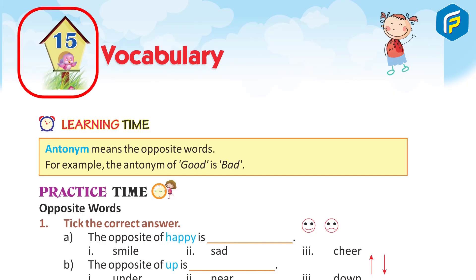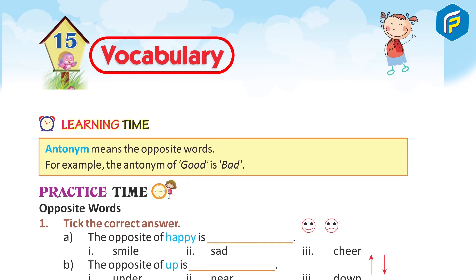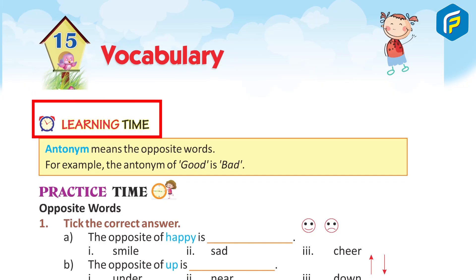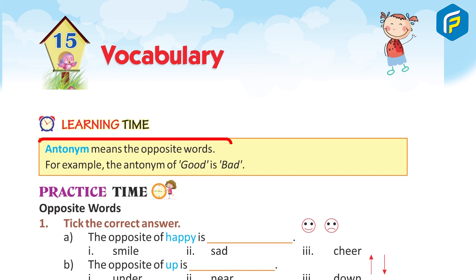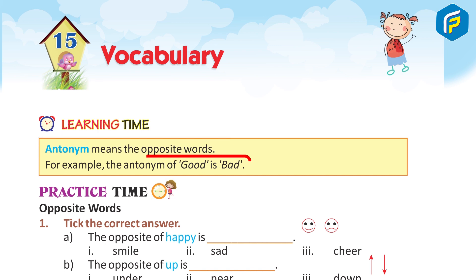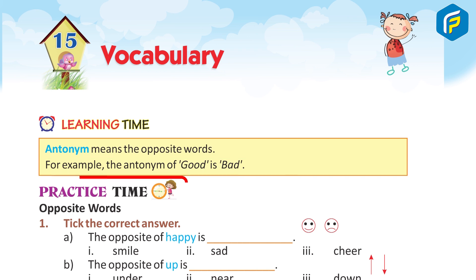Chapter 15 vocabulary — learning time. Antonym means the opposite word. For example, the antonym of 'good' is 'bad.' Practice time.